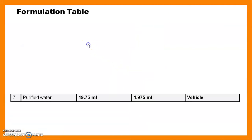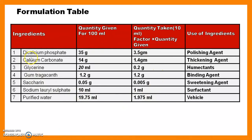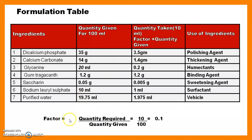The formulation table contains ingredients and their quantities given for 100 ml. Since we need to prepare only 10 grams, we calculate a factor: quantity required divided by quantity given, which is 10 divided by 100 = 0.1. We multiply all ingredients by 0.1. For example, 35 multiplied by 0.1 gives 3.5 grams of dicalcium phosphate required for 10 grams of paste.